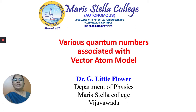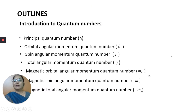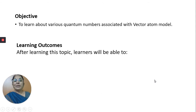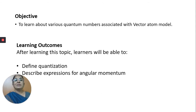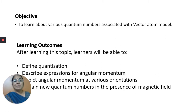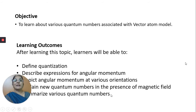Hello viewers. Today I shall explain the various quantum numbers associated with the vector atom model. You can find the outlines of this talk from this slide. The objective is that you will learn about various quantum numbers associated with this model. The learning outcome will be that you will be able to define quantization, describe expressions for angular momentum, draw and depict the angular momentum at various orientations, explain the new quantum numbers arising due to the presence of the magnetic field, and summarize all 7 quantum numbers associated with this vector atom model.